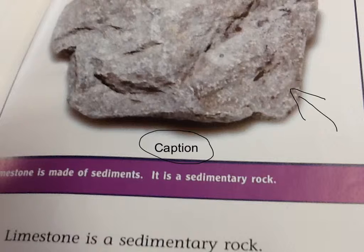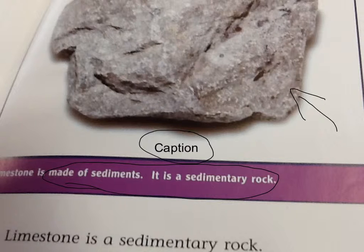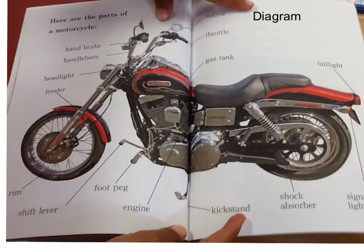This is a caption. A caption is like a small sentence about what a picture shows — it gives the meaning of the picture. This is used for understanding what the picture means. For example, if I'm looking at a sedimentary rock, the caption tells you what a sedimentary rock is.